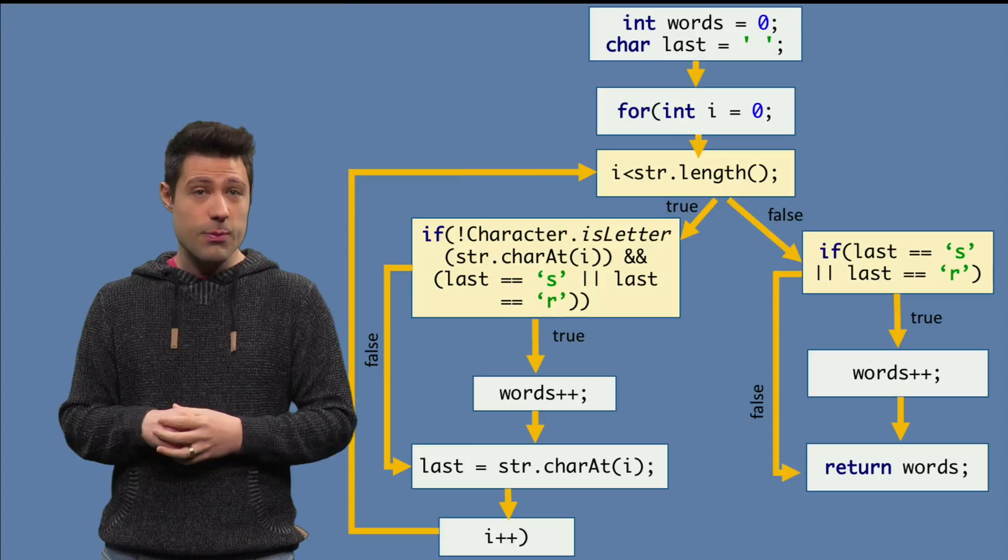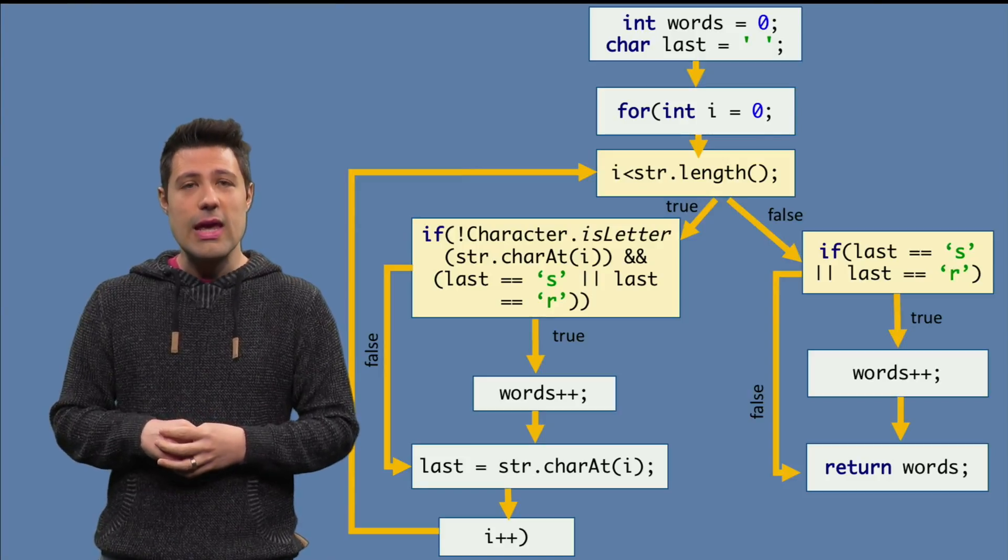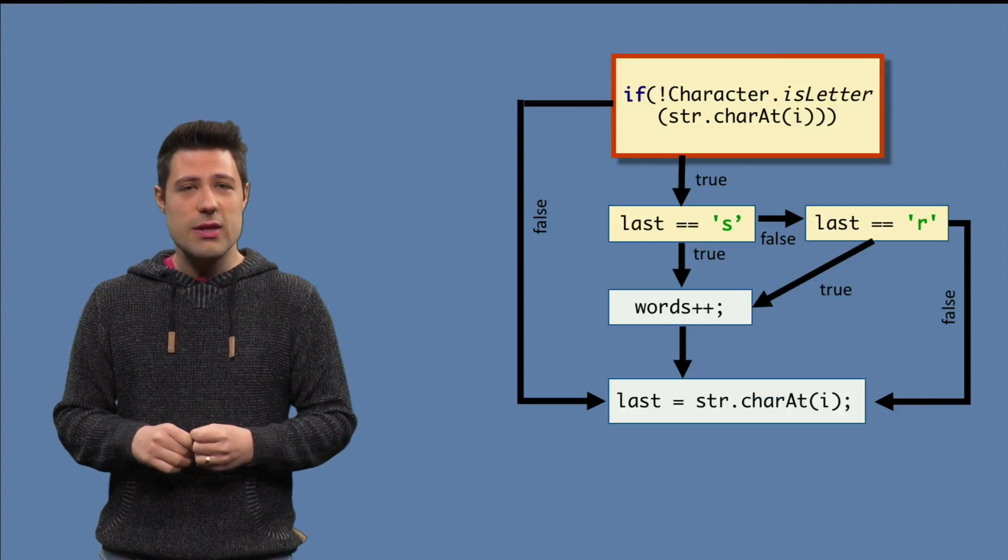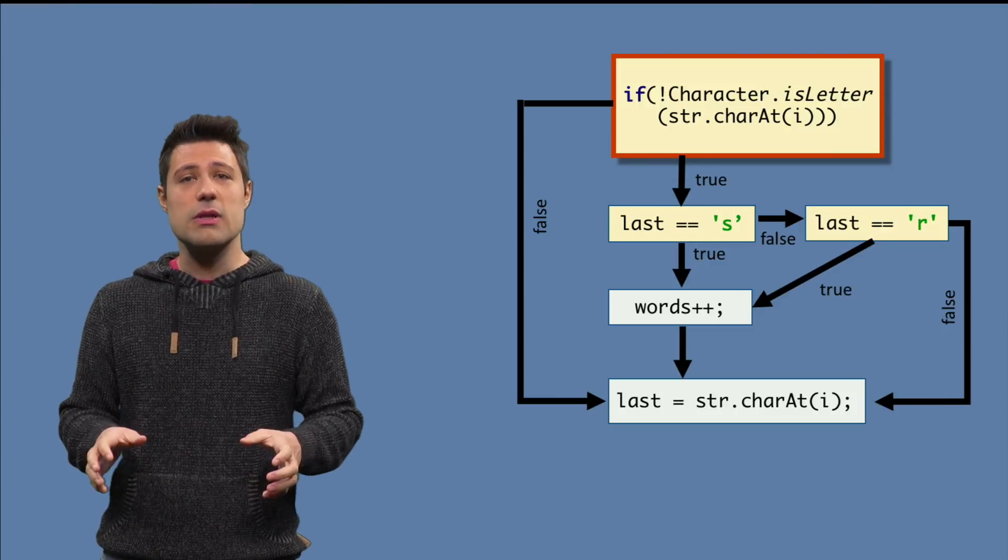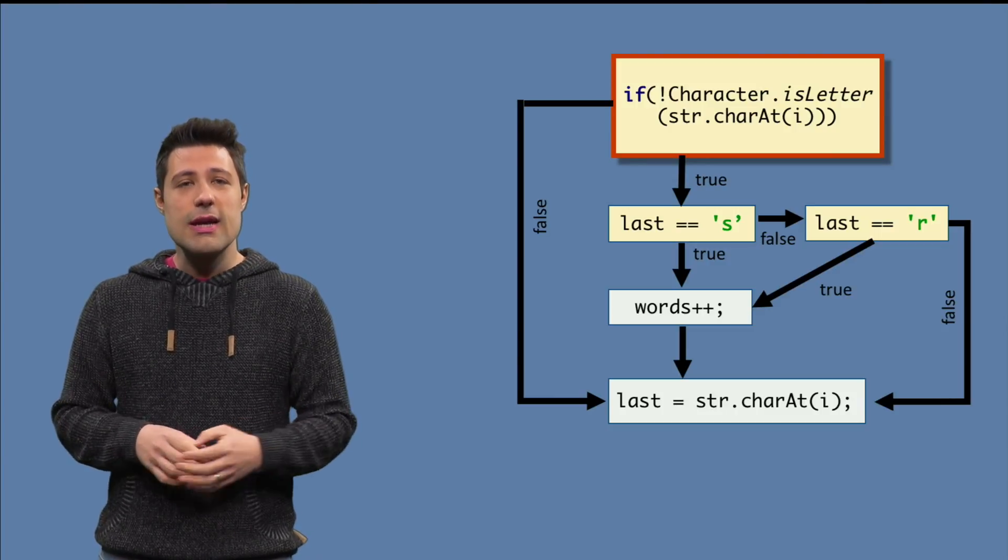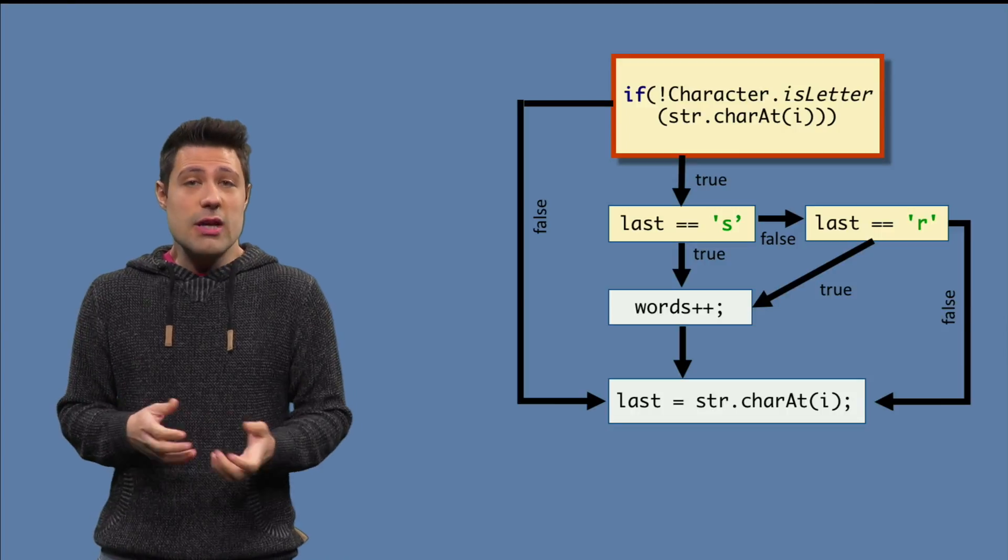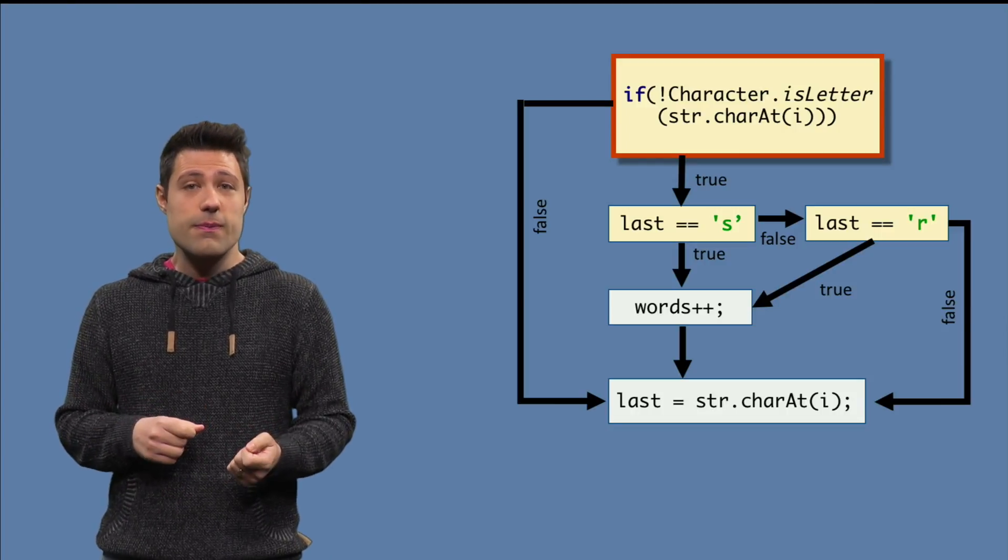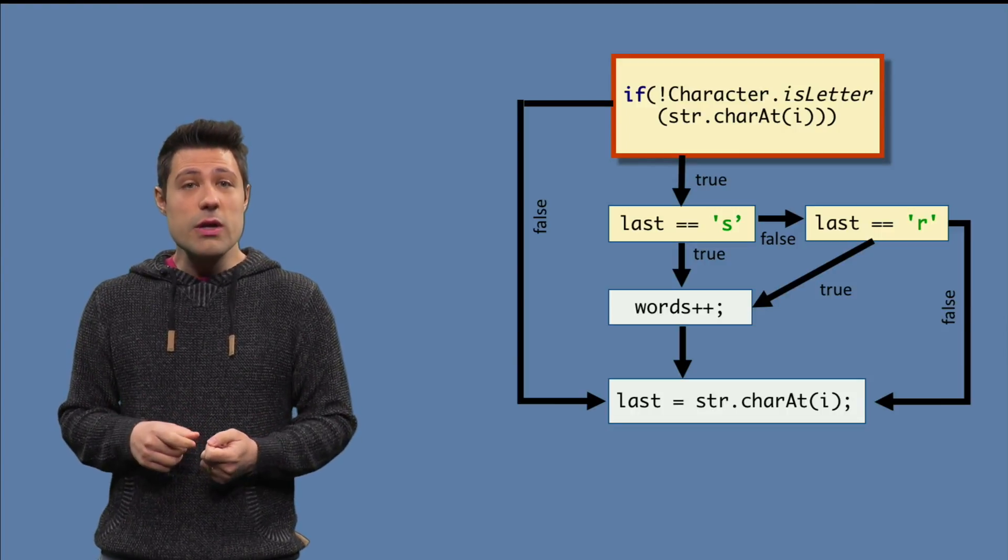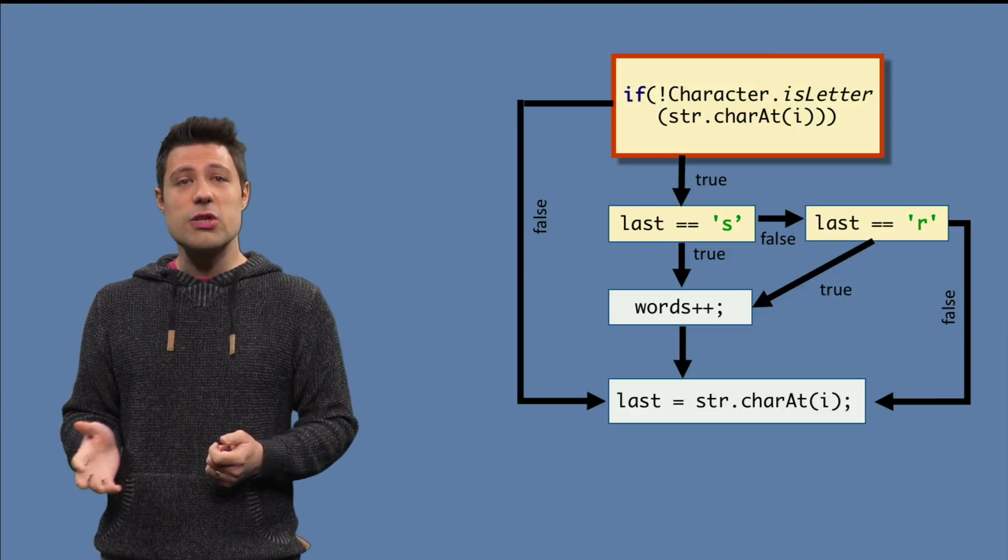Let's take as an example the big if block that we have. If we zoom in closely, we see that the block can be divided into multiple conditions. The first one, the character is letter check, and the second one, the letter inside of the last variable. And in there we have one condition for the S and one condition for the R.